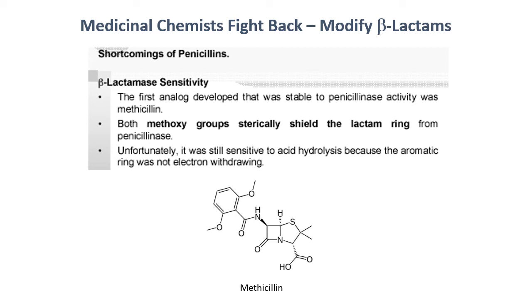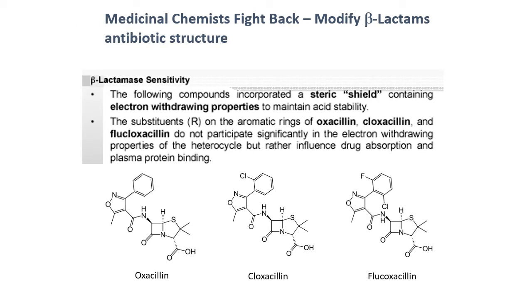Methicillin was the first drug developed that was resistant to beta-lactamase enzymes. It achieves this through a steric shielding effect — two methoxy groups shield the beta-lactam ring from penicillinase. The problem is these methoxy groups are not electron-withdrawing, so methicillin is susceptible to acid hydrolysis and cannot be given orally; it must be given by IV. A number of drugs were subsequently developed using the same steric shielding concept but with electron-withdrawing properties: oxacillin, cloxacillin, and flucloxacillin. All these drugs are still used clinically and extensively even now.